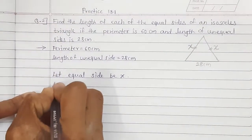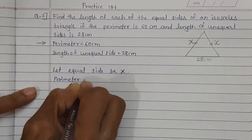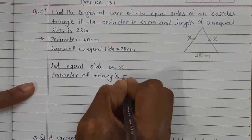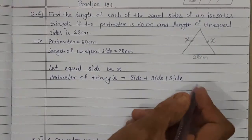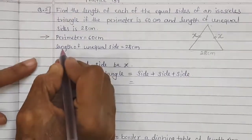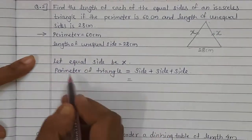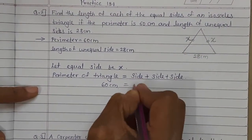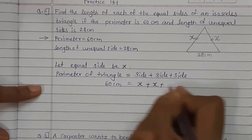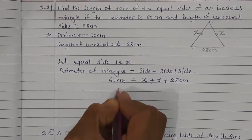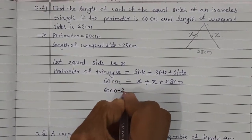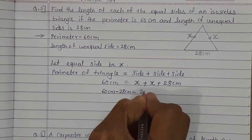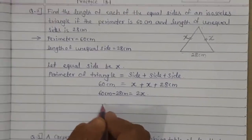Now what is the formula to find the perimeter of a triangle? Perimeter of triangle = side + side + side. Perimeter is given as 60 cm. So: 60 = x + x + 28. Transferring 28 to the other side, it becomes minus: 60 minus 28 = 2x.